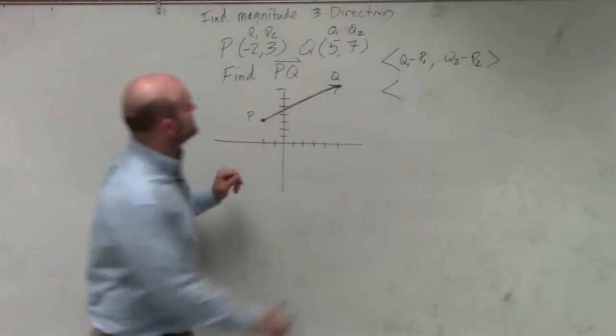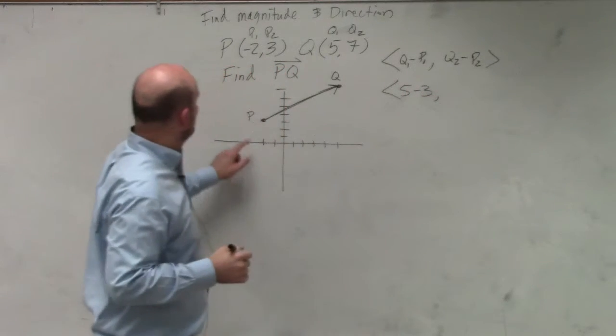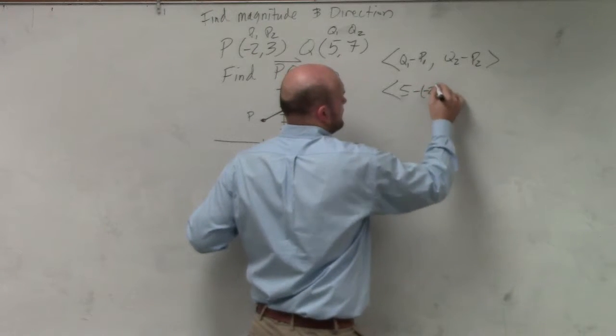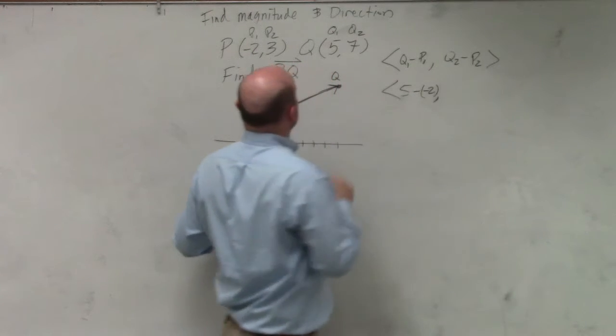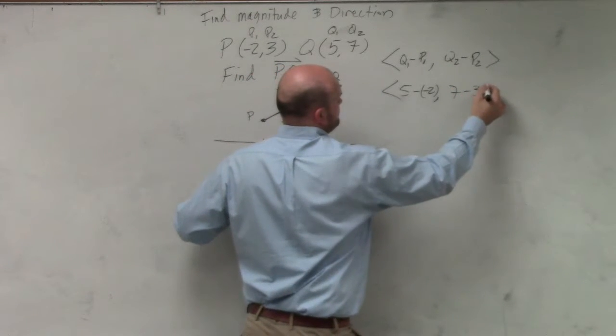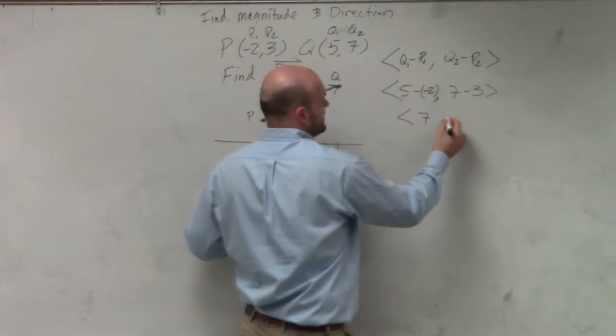So therefore, this is 5 minus 3. I'm sorry, 5 minus negative 2. And then this becomes 7 minus 7 minus 3. So we would have 7 comma 4.